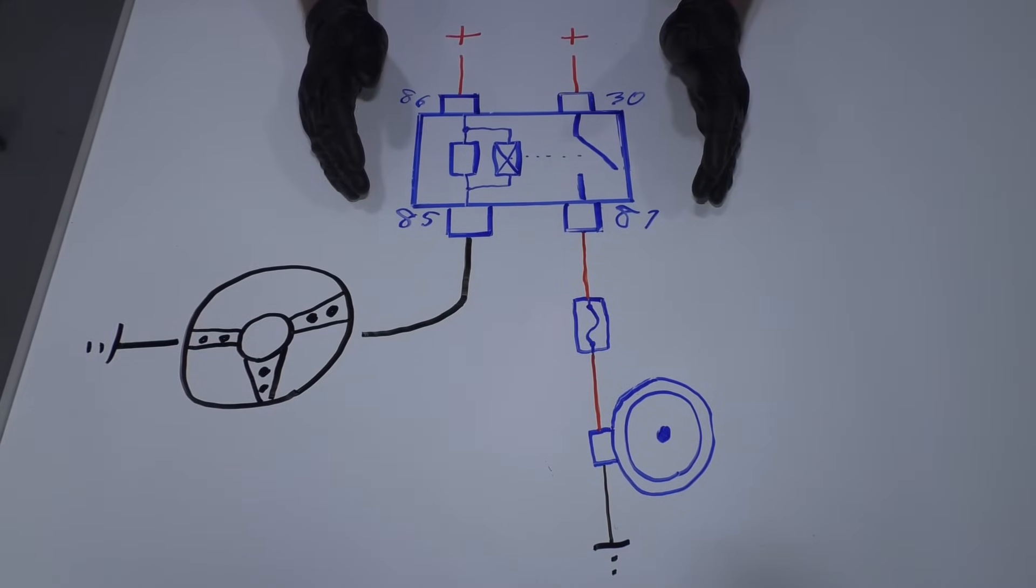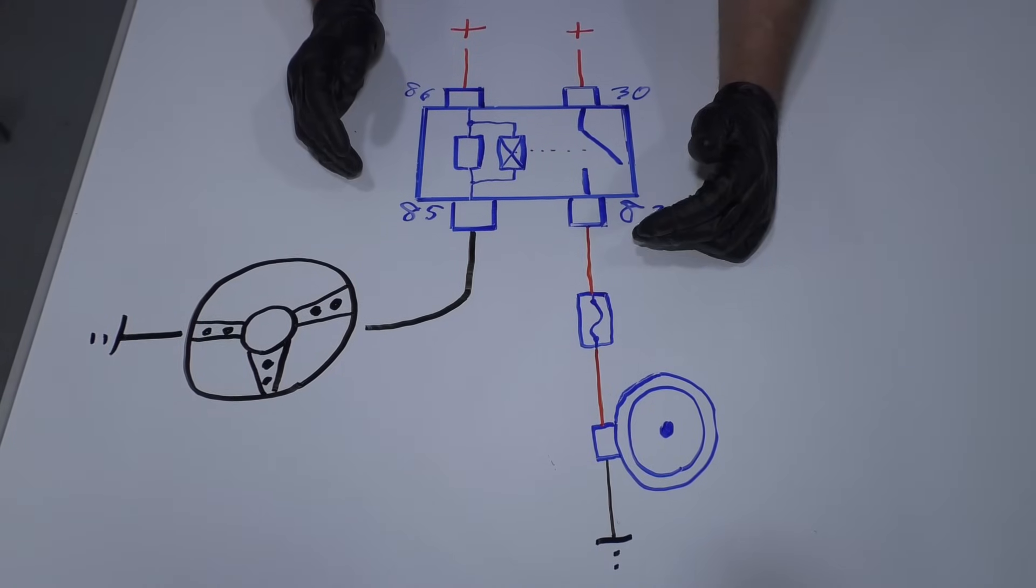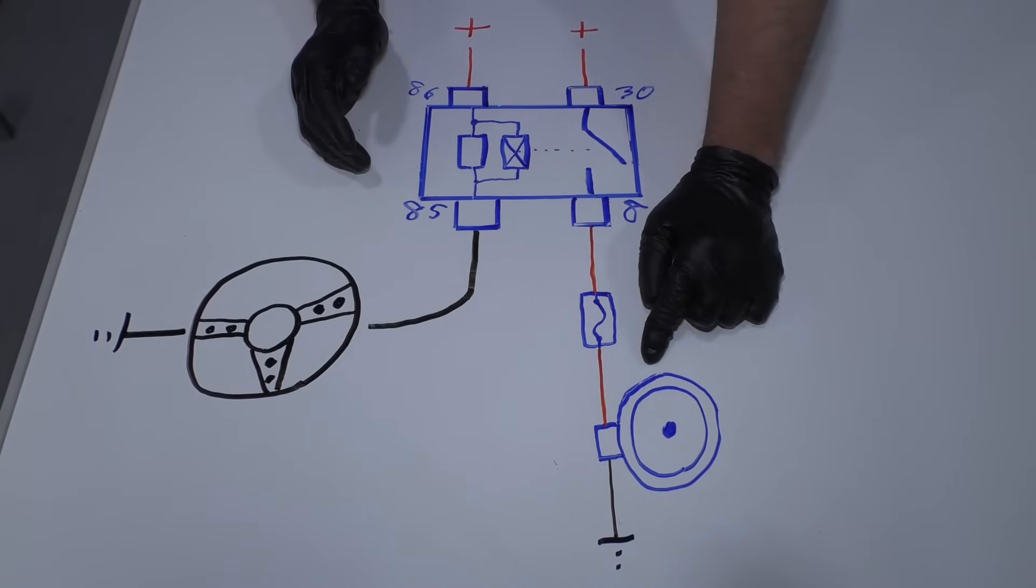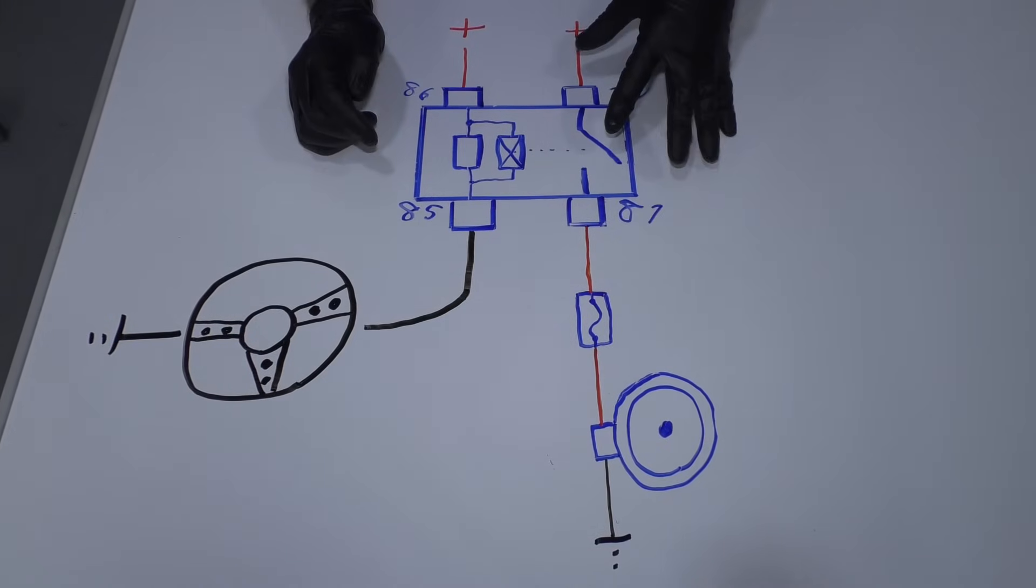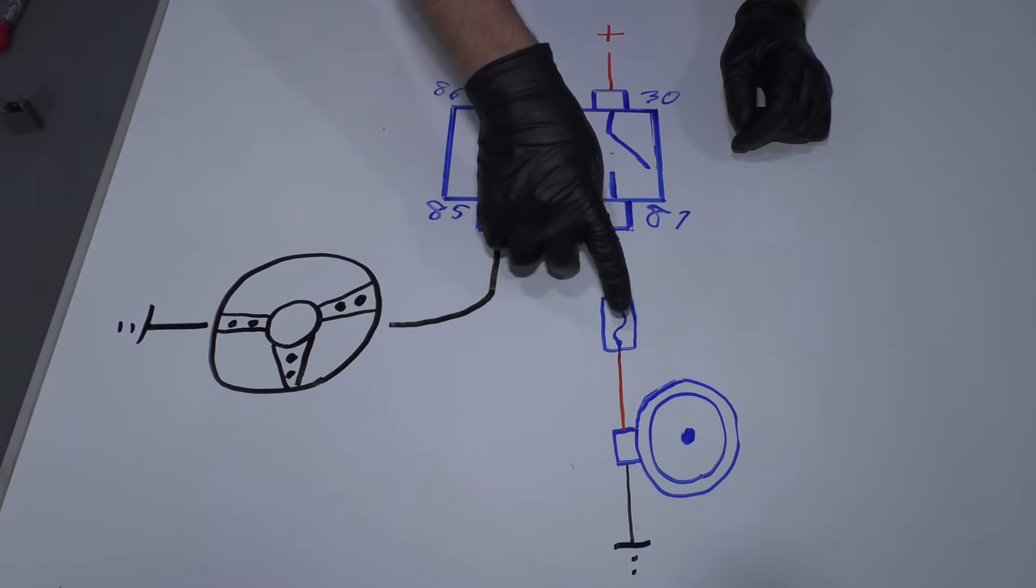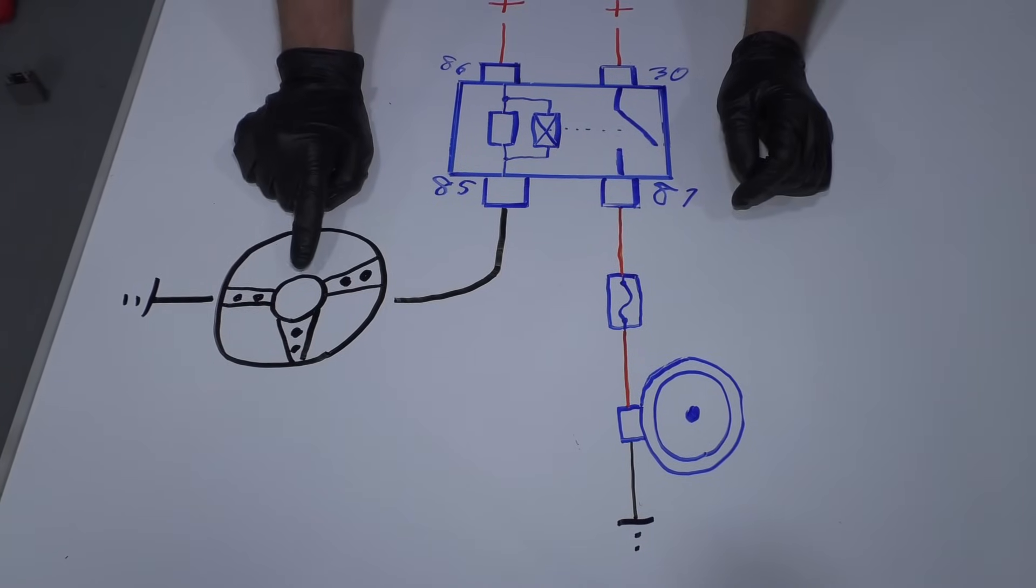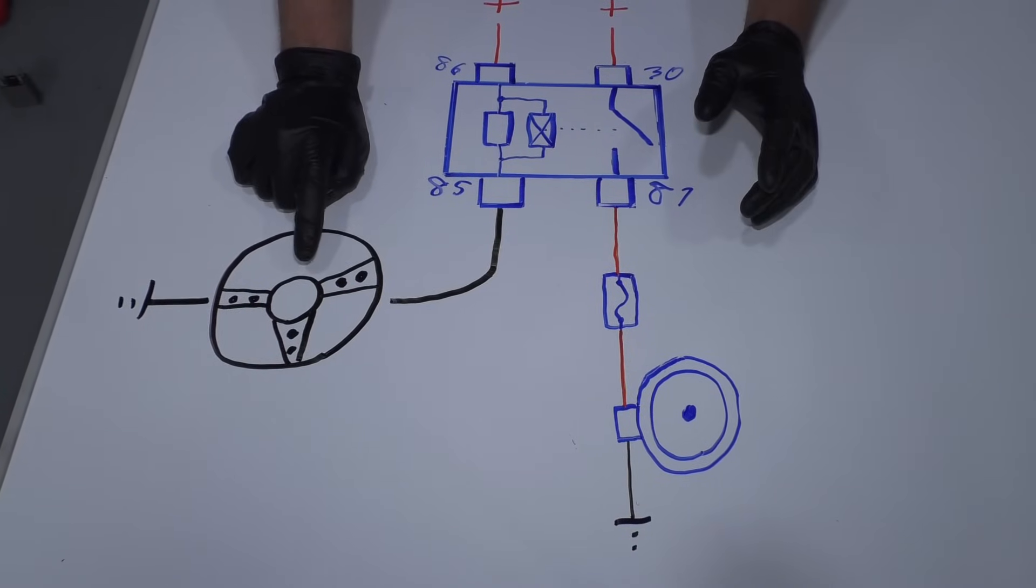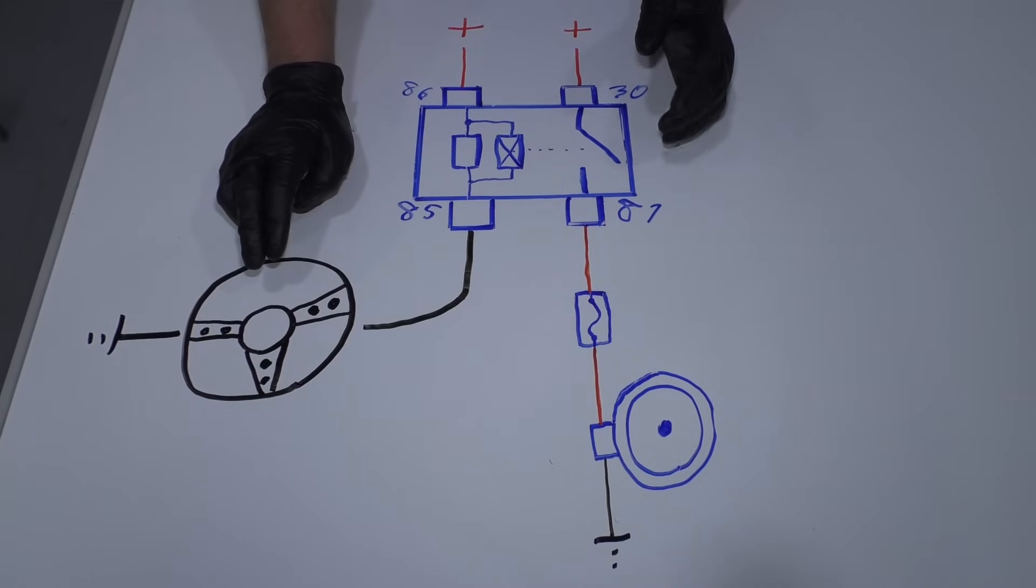So why do we have a relay? The reason why is because you have a high amperage circuit. So it takes a lot of amperage to get the horn to work, and you have it go through a fuse. And if you had a switch, let's say you just wired the horn right into the switch of the horn, you're going to have a lot of amperage going through the horn switch, and it's going to burn out a lot faster. So the relay is going to prevent that switch from burning out.